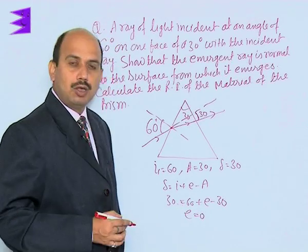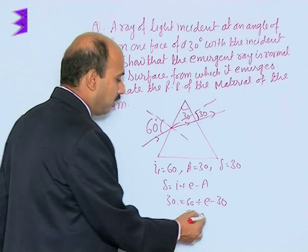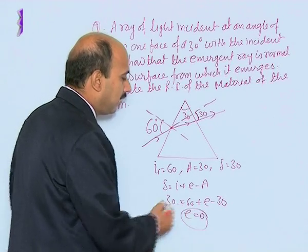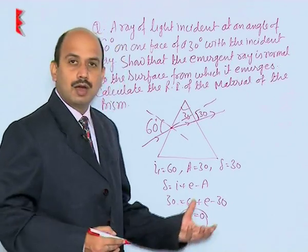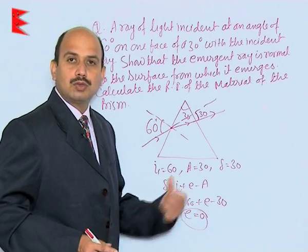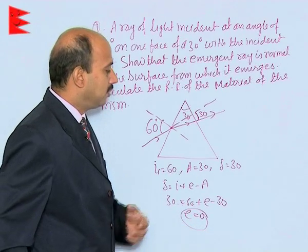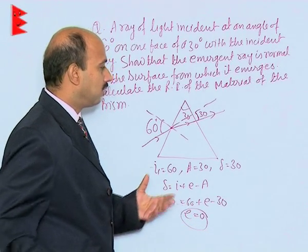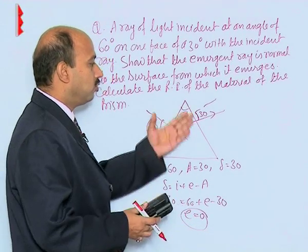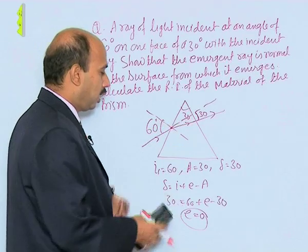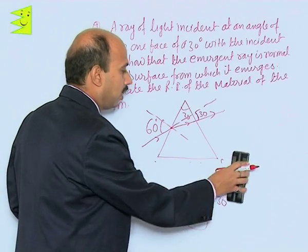If the angle of emergence E is 0, it means the ray is emerging out normal to the surface. If it is emerging out normal to the surface, the angle of emergence is 0.